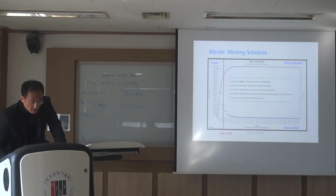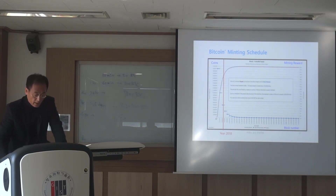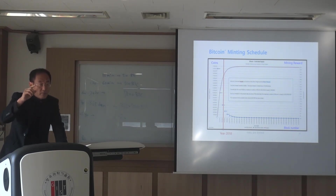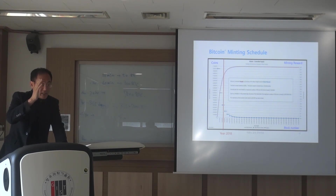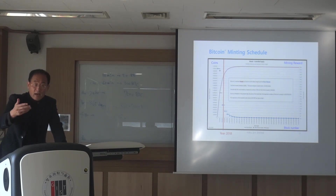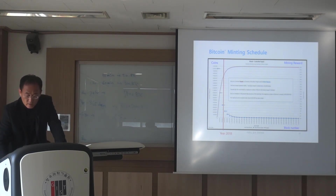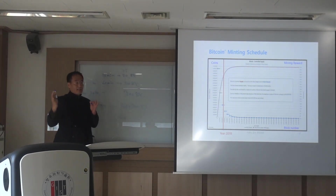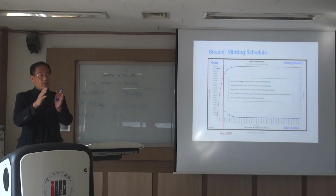So 10 million Bitcoin were created in four years with 210,000 blocks created. Bitcoin has a halving period — every 210,000 blocks created, which is about four years, the Bitcoin protocol will reduce the number of issuance by half. So in the second period, the number of Bitcoin created per block is reduced to 25 rather than 50.